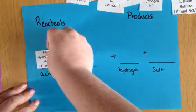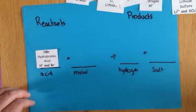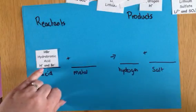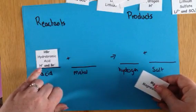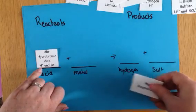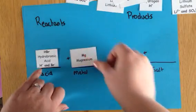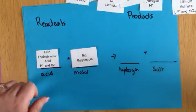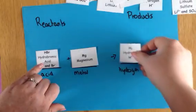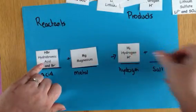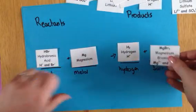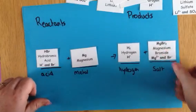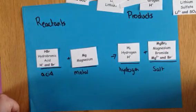And the last one here: hydrobromic acid — not one that's commonly used at GCSE but the principle is still the same. So we have hydrogen ions here and we're reacting them with metal. If we take the hydrogen ions away they're going to go off as a gas. We're left with bromide ions and magnesium ions, and that's going to be magnesium bromide.